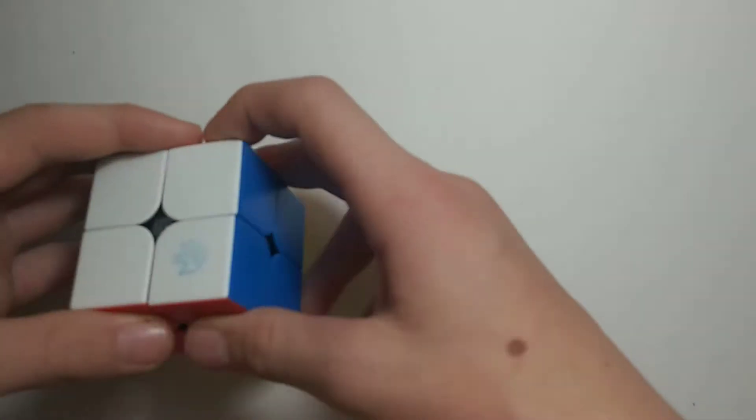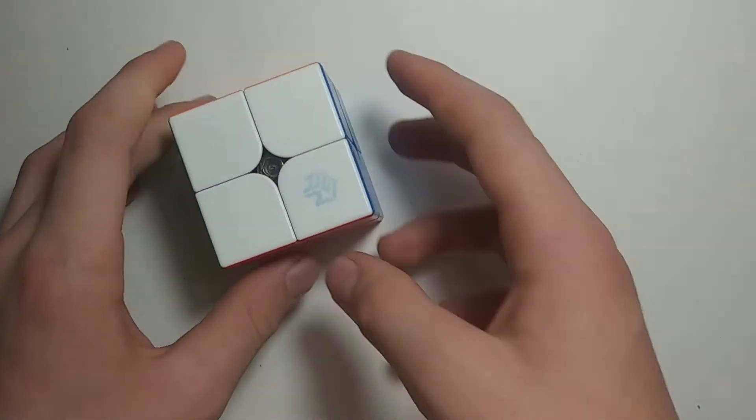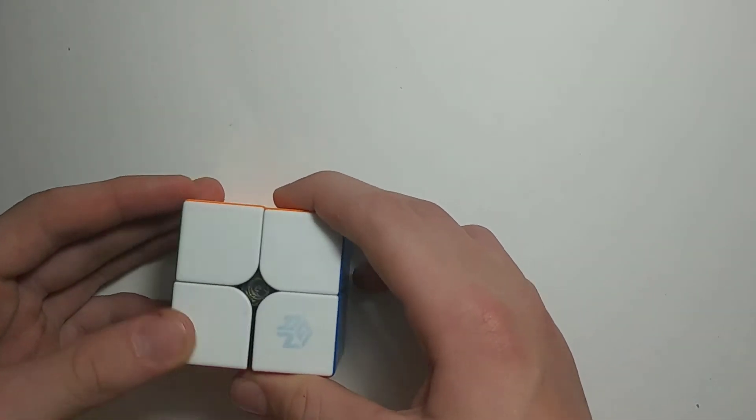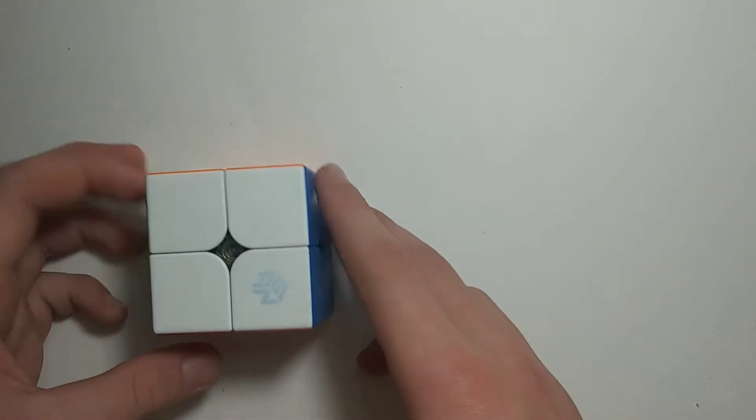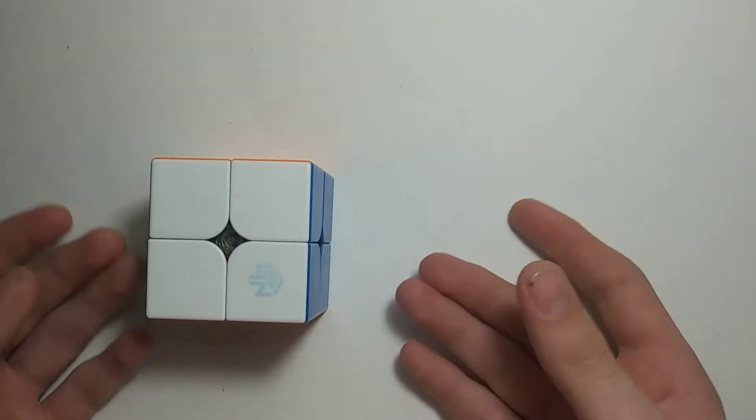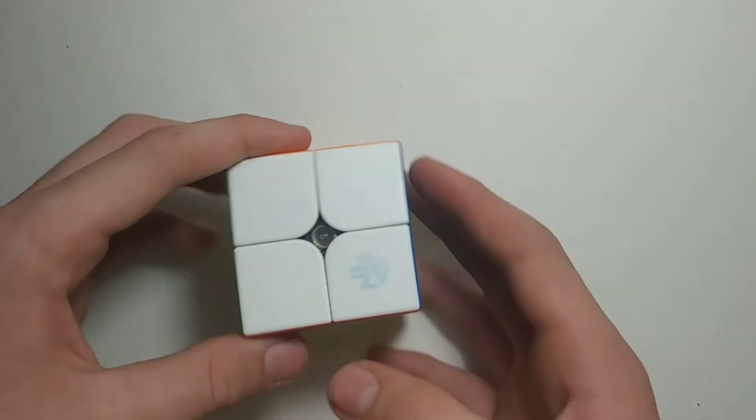Alright, let's get into it. First off is 2x2. I'll be using the GAN 251M - I have a review on that so check it out. My goal for 2x2 in this comp is to get a sub-4 average as well as a sub-3.5 single.